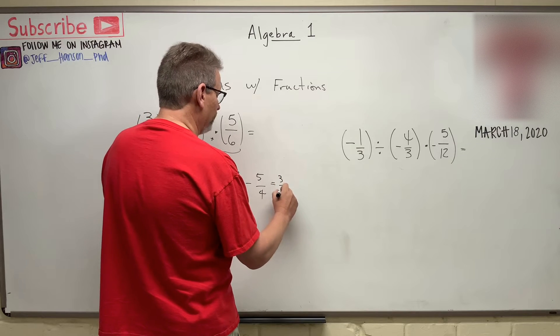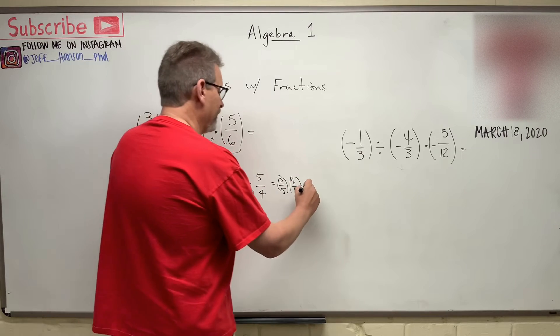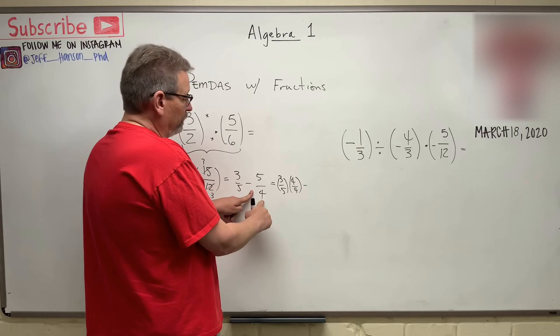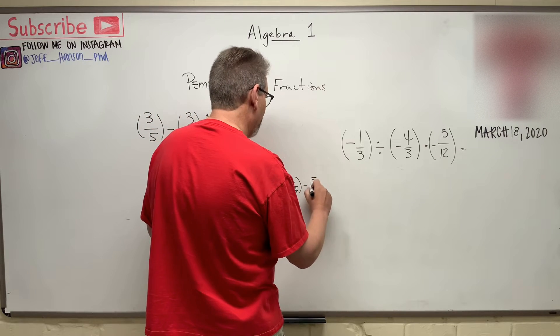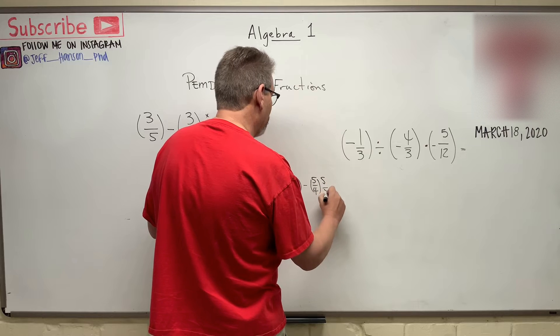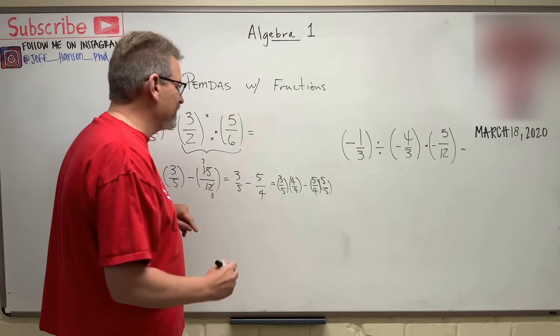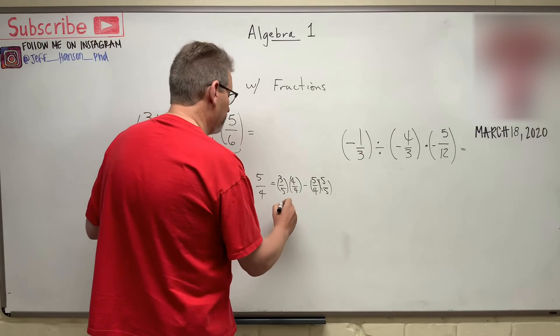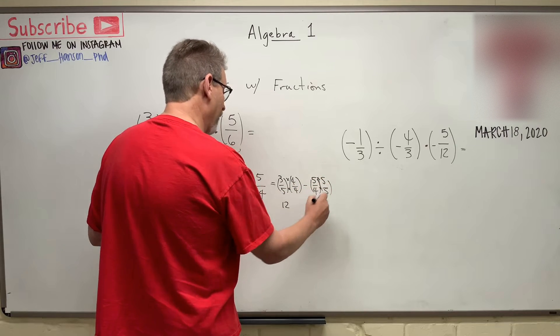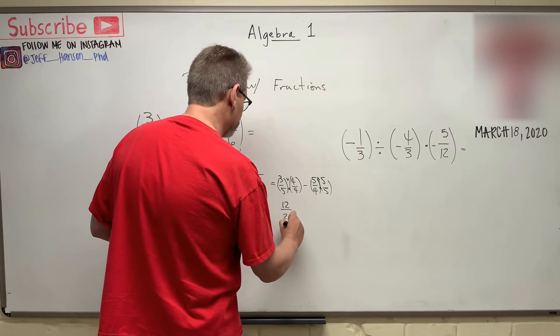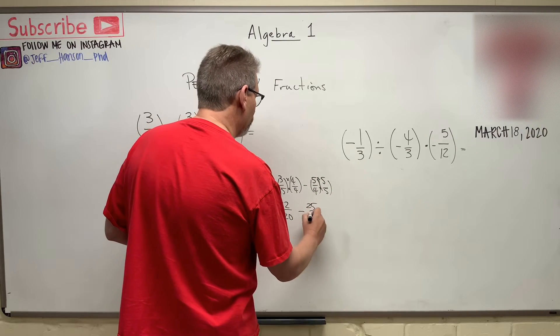3/5 times 4/4 minus - to get him to 20, what do I have to do? Times a 5. So minus 5/4 times 5/5, and that's just 1, that's just 1, so it doesn't change anything. This becomes 12 over 20 minus 25 over 20.